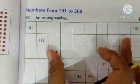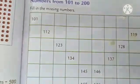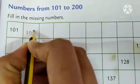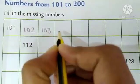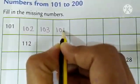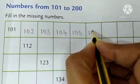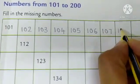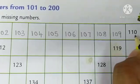Now, fill the missing number. Now, let's count and do the missing numbers from 101. What is the next number? 102. Then, 103. 104. 105. 106. 107. 108. 109. Then, 110.